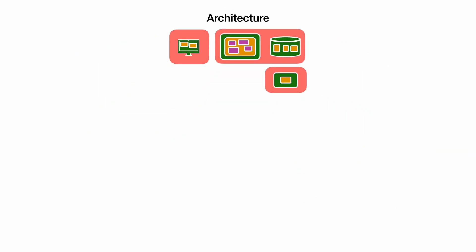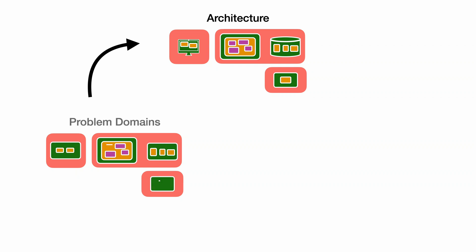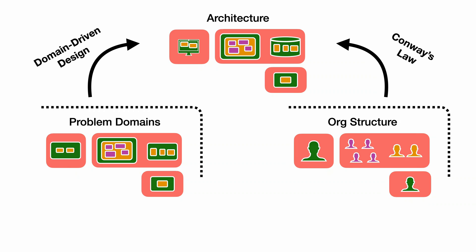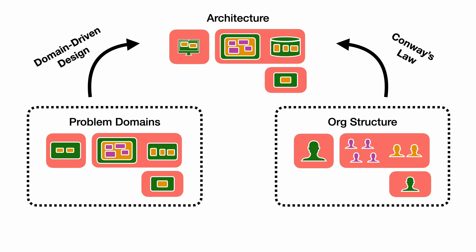A common approach today is for these technical boundaries to be aligned to the real-world business problem domains. That's what Domain-Driven Design, or DDD, is all about. The architecture is also influenced by our organisation and how our teams are structured, which is what Conway's Law is about. These three structures influence each other and evolve together. I have videos on my channel about both of those topics too, so be sure to check those out if you haven't already.